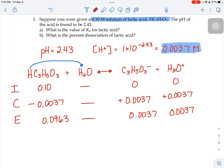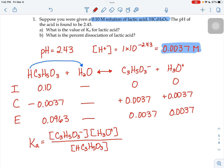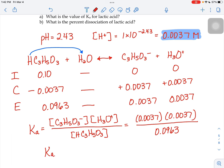Now that I have my equilibrium concentrations, I can write an equilibrium expression. I'm going to do products over reactants, and I'm going to start subbing in all the numbers that I know. So my lactate ion is 0.0037. So is my hydronium ion. And my lactic acid at equilibrium is 0.0963. If I were to plug that into my calculator and solve, I would get an answer of 1.4 times 10 to the negative fourth.